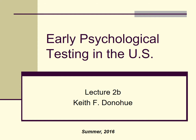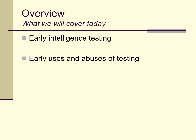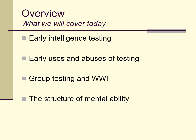Today's lecture is about early testing in the United States, focusing on ability or intelligence testing. I'm going to talk about some of the uses and abuses of testing, especially intelligence testing, in the early to mid 20th century, group testing during World War I and to a lesser extent World War II, and how innovations in statistical techniques — particularly factor analysis — led to increasing sophistication in our understanding of the structure of mental ability, intelligence, and personality.